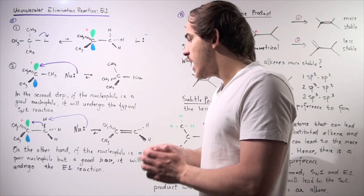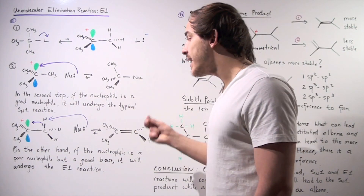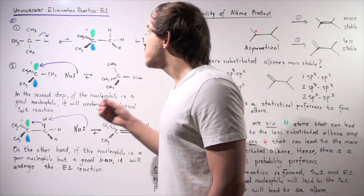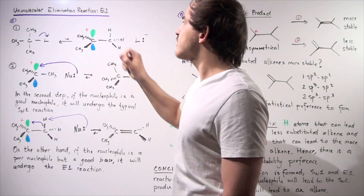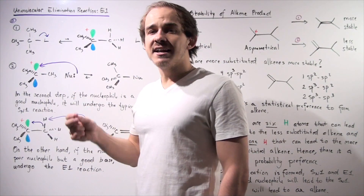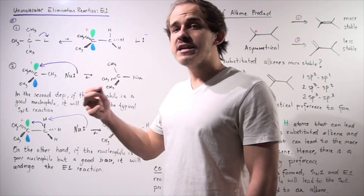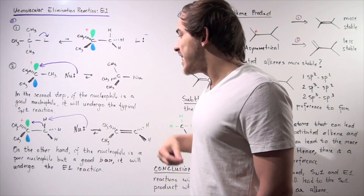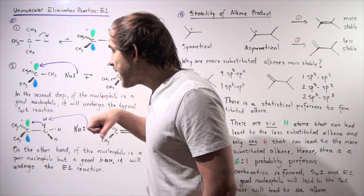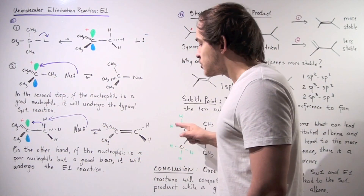On the other hand, if our nucleophile is a poor nucleophile but a good base — better base than nucleophile — it will undergo a unimolecular elimination reaction, also known as the E1 reaction. In this reaction, what is eliminated is a proton from an empty 1S orbital, because a good base competes for an empty 1S orbital. This lone pair of electrons takes away the proton, leaving this pair of electrons to attack the empty 2P orbital, forming a double bond — an alkene product.